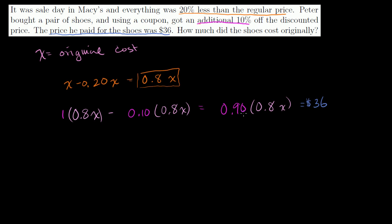So if we want to figure out x, we could multiply 0.9 times 0.8. Let's do that. So 0.9 times 0.8. 9 times 8 is 72. We have two numbers behind the decimal. So it's 0.72. So you get 0.72x is equal to 36.